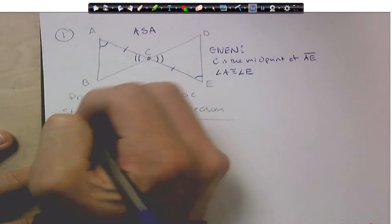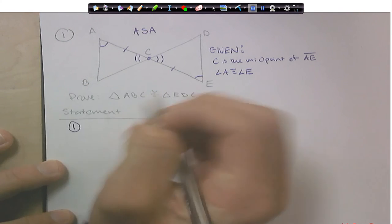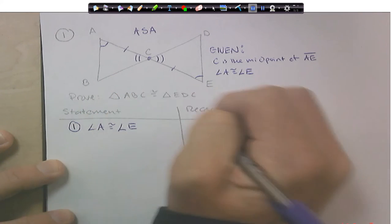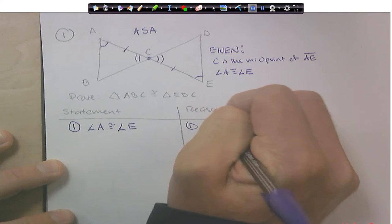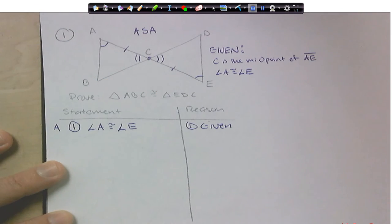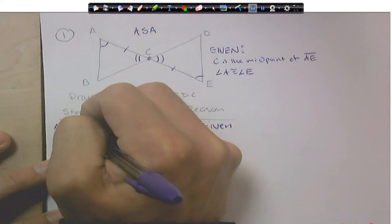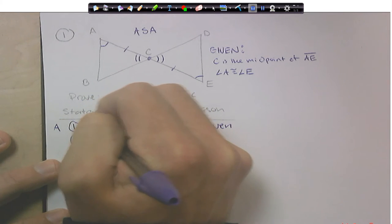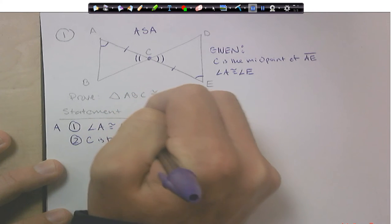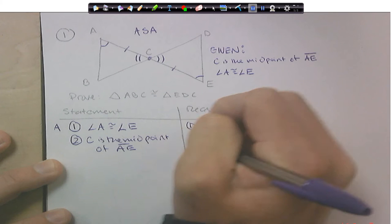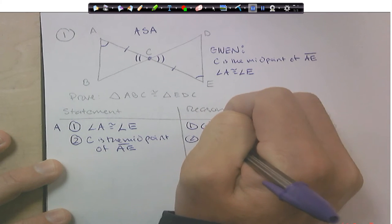First, I'm going to go ahead and set up step one. Now, that angle A is congruent to angle E, and that's given. And there I've proven an angle already. Next, I'm going to talk about, and again, you can do this in different steps in different ways, but C is the midpoint of AE, and that is also given.